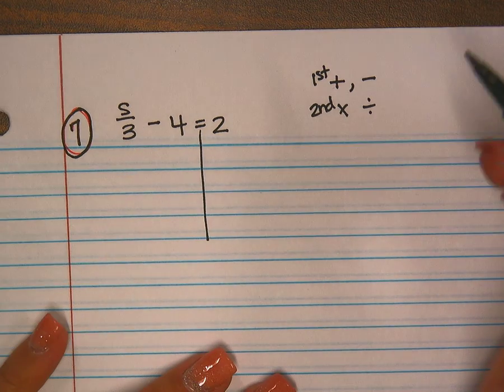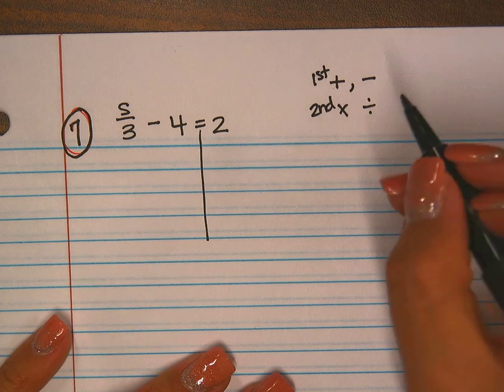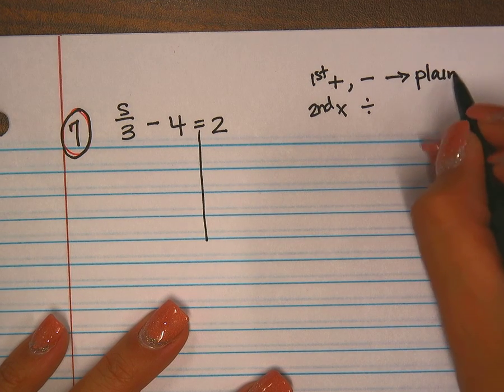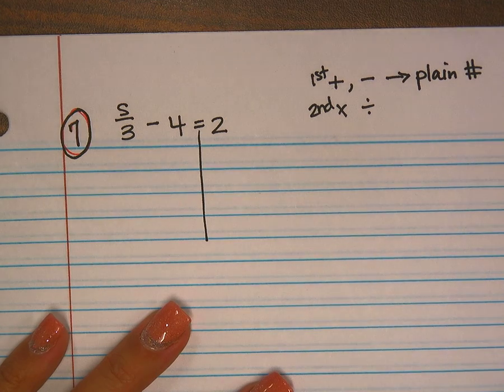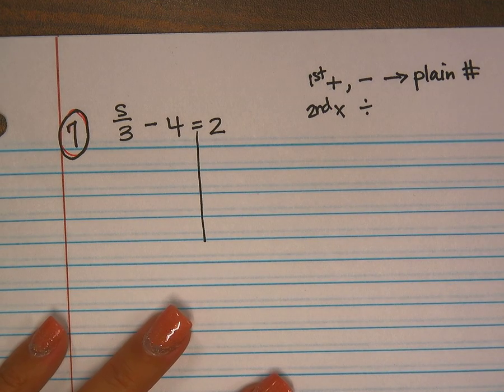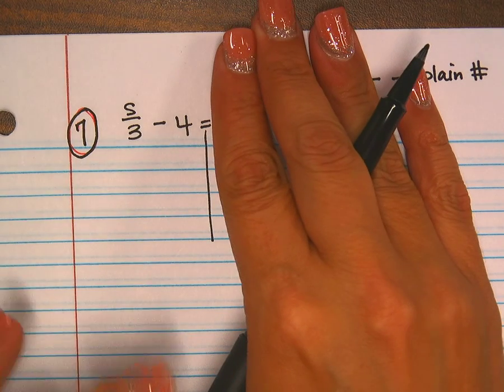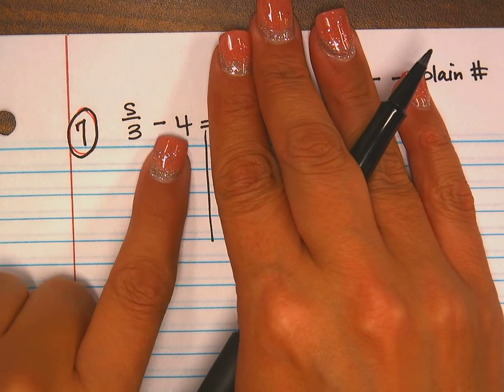I look for my plain number because that's what I'm going to be adding or subtracting. When I say plain number, you might think naked number - a number that does not have something attached to it. Looking at my side with the variable, it's this minus four.